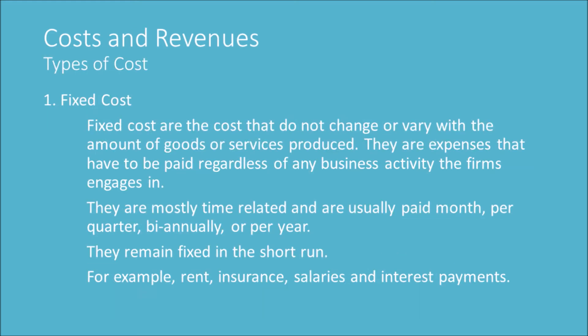Types of cost. 1. Fixed cost: Fixed costs are the costs that do not change or vary with the amount of goods or services produced. They are expenses that have to be paid regardless of any business activity the firm engages in. They are mostly time-related and are usually paid monthly, per quarter, bi-annually, or per year.